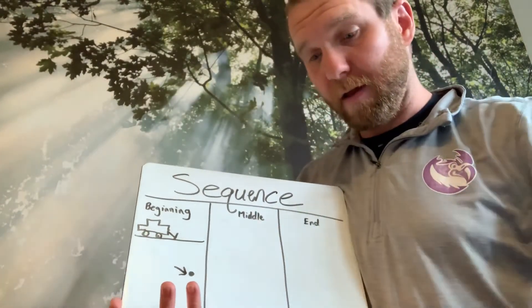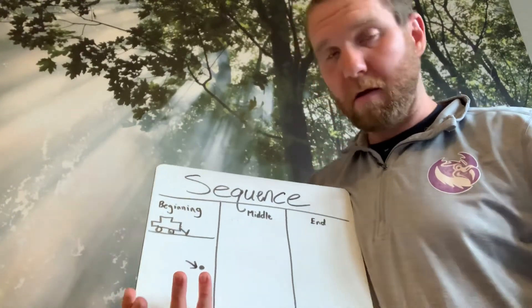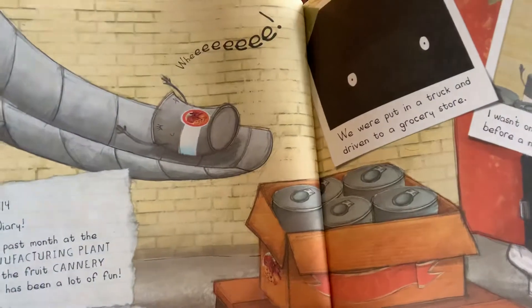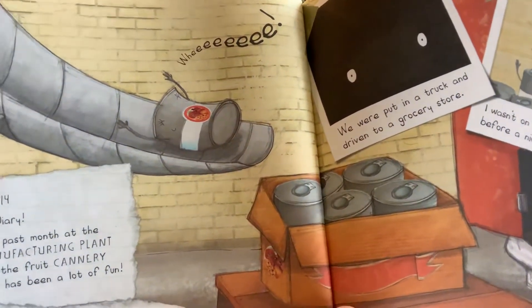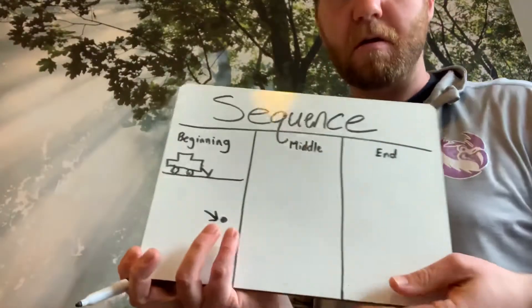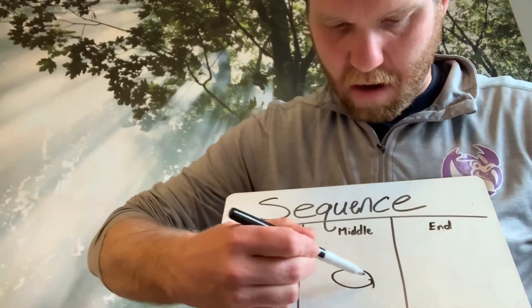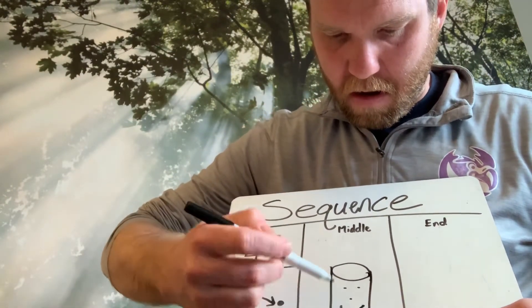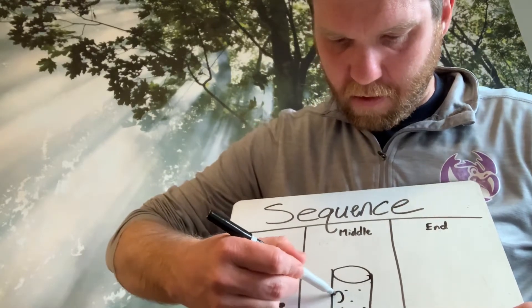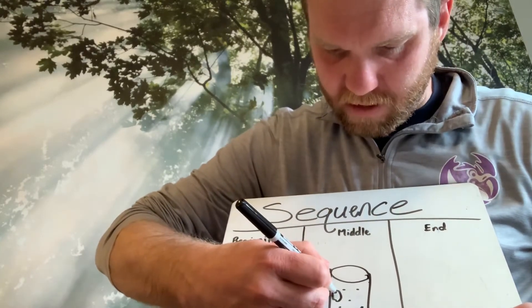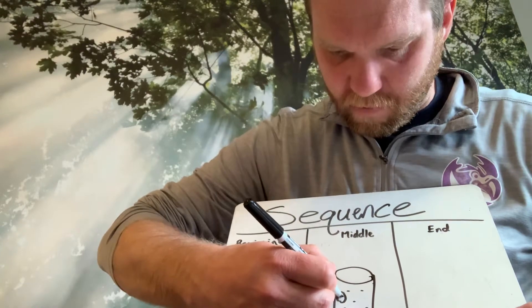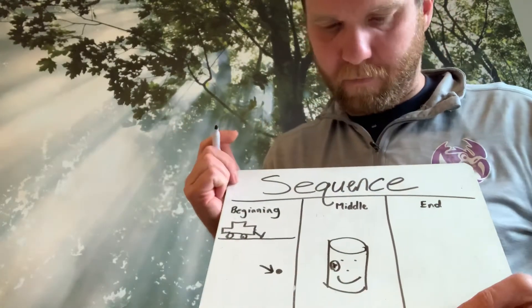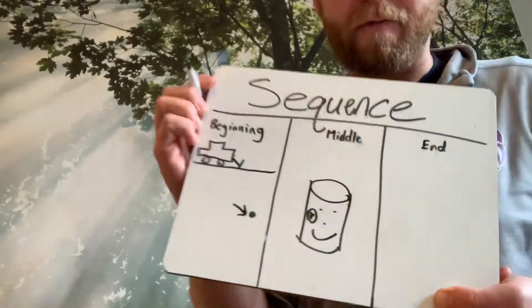Do you remember what he was made into in the middle of the story? There's a good picture of it. He was turned into a can — a can of fruit. So, in the middle of the story, here's our aluminum can and he's fruit. We'll try to make a teeny tiny strawberry. He was a can of fruit.